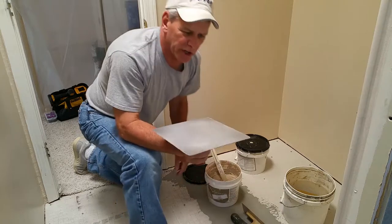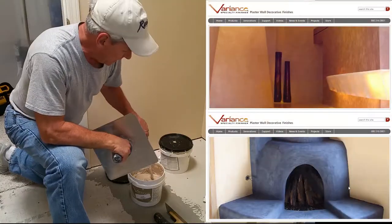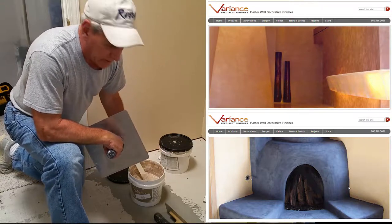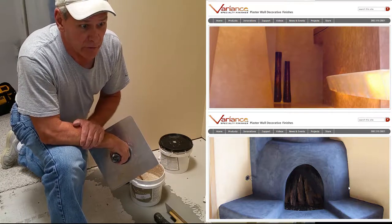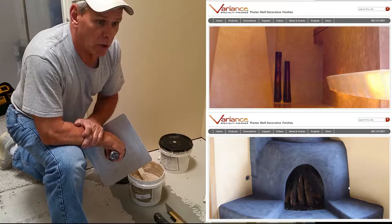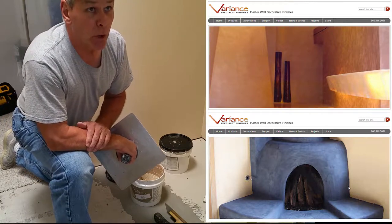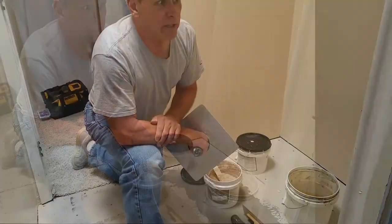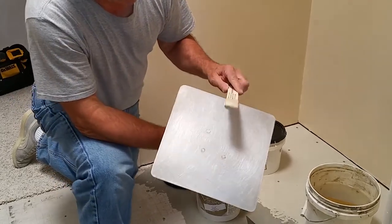This product is called Variance. It's an acrylic coating that goes on walls and can give you a plaster-like appearance to the wall itself. You can build depth into the texture of the wall — the look of it is called modeling. So we're going to do one wall in this bathroom with Variance in a light, milky brown color.